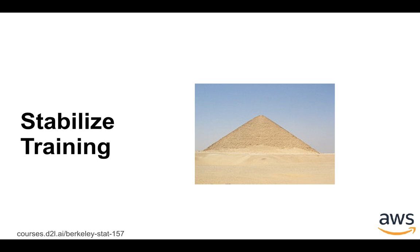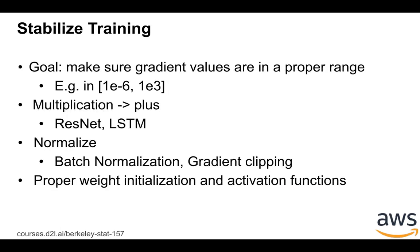Next, we can talk about how to stabilize the training. To stabilize the training, we can make sure the gradient values are in the proper range. For example, we can make sure all the gradients are larger than 1e-2 or smaller than 1e3. Then no matter how we change the weights, we always get the gradients in this range, and the training will be less sensitive to the learning rate.